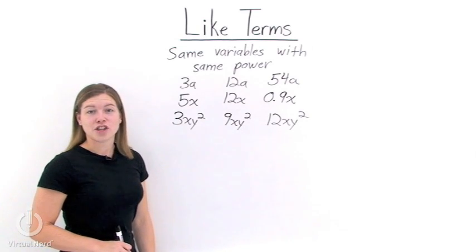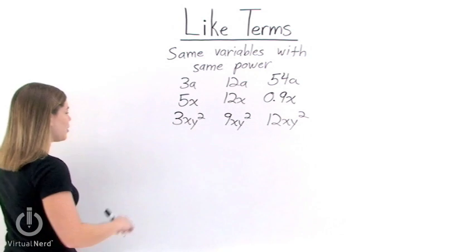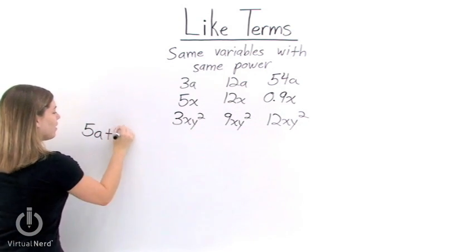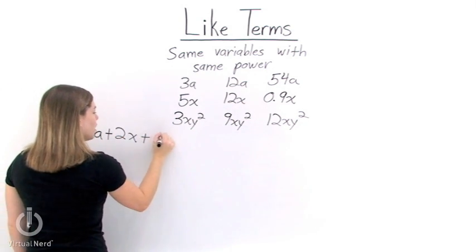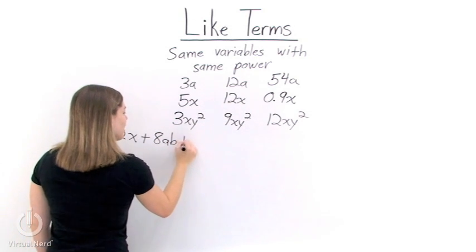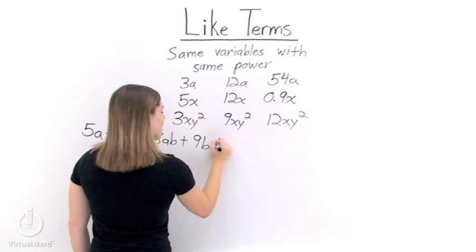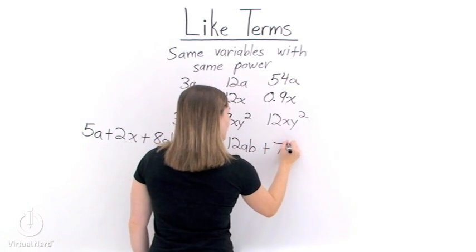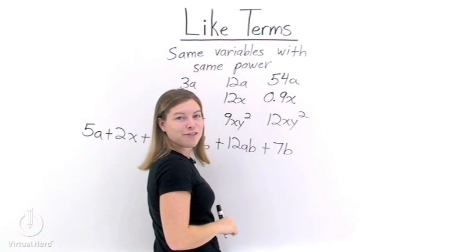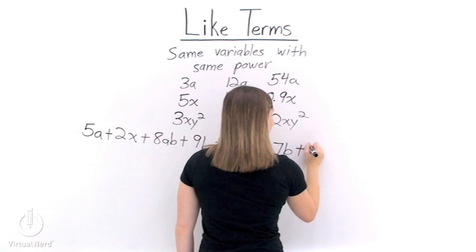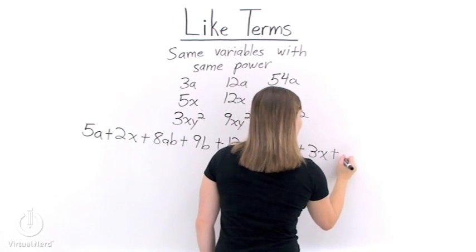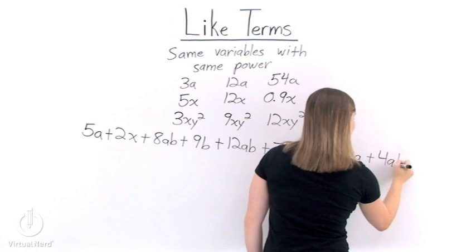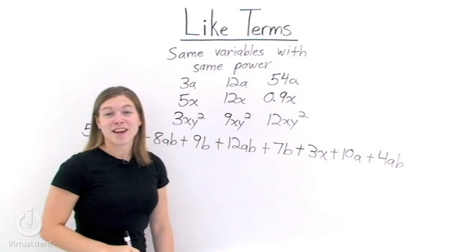Now let's take one large expression and see if we can pick out all of its like terms. Let's take 5a plus 2x plus 8ab plus 9b plus 12ab plus 7b, and then we'll add a few more: 3x plus 10a plus 4ab. That seems like enough terms.